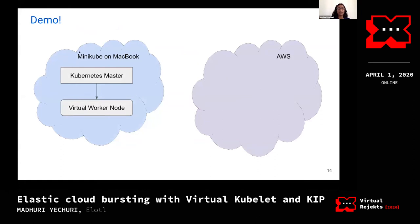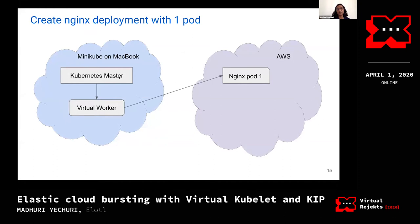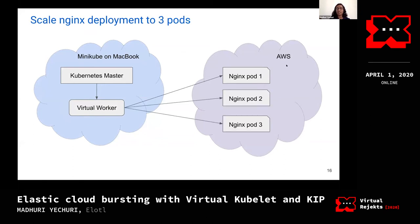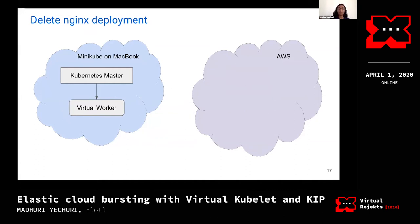In the demo, I have Minikube running on my MacBook using Hyperkit, with a Kubernetes master and the virtual worker node set up on Minikube. I will create an Nginx deployment with one replica, so the Nginx pod will be shipped off to AWS. I will then scale the replica for the Nginx deployment from one to three pods, so the automatic scaling should go to AWS as well. After that, I will delete the Nginx deployment, which should reduce the footprint on AWS from three replicas back to zero.